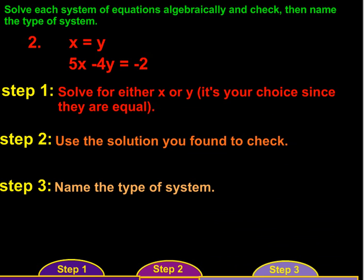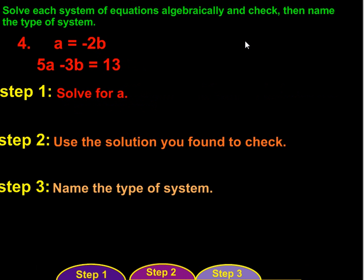Okay, let's move on to another question. Question number 4. We have a equals negative 2b, and the equation is 5a minus 3b equals 13.